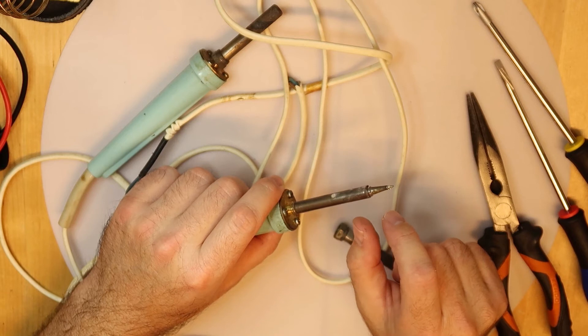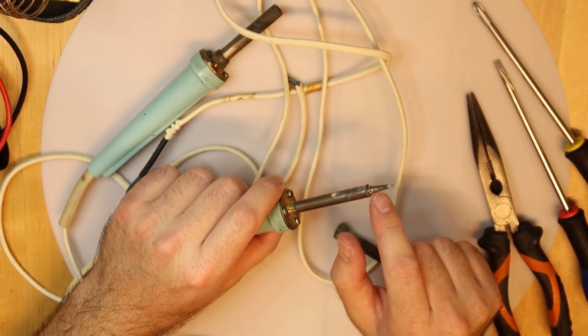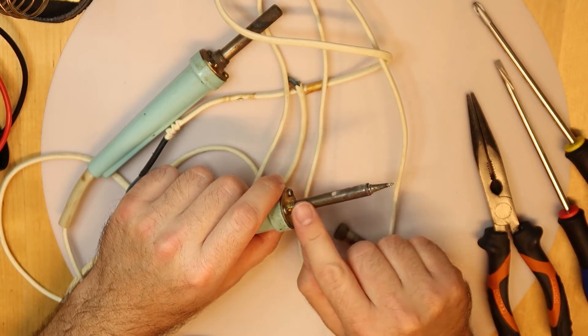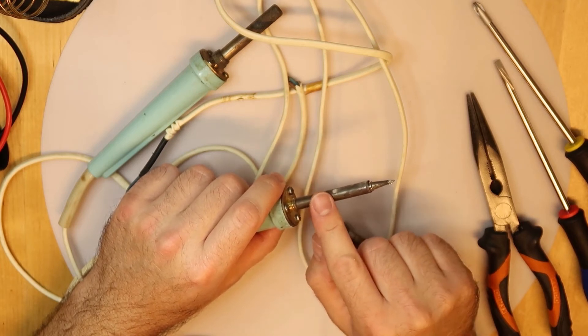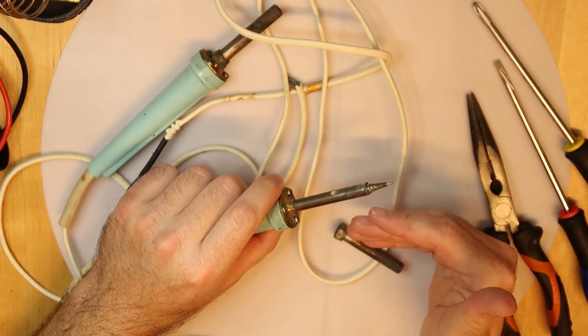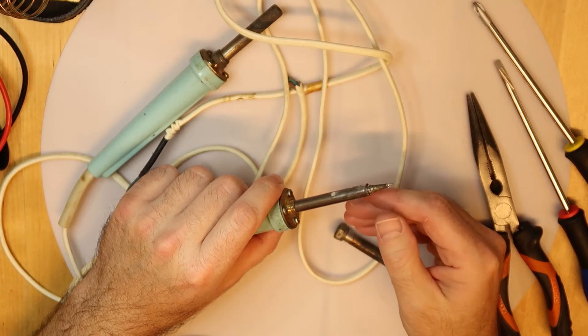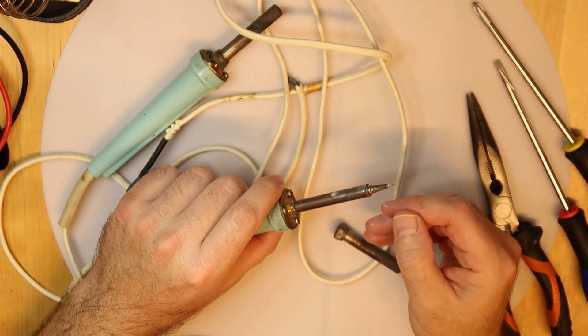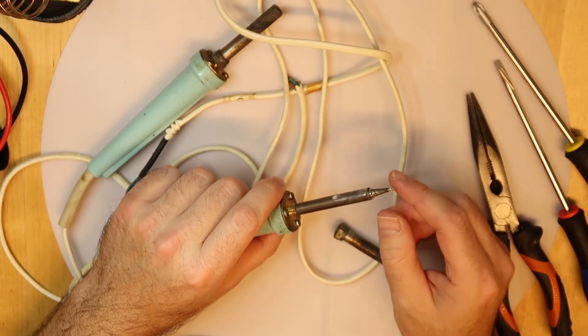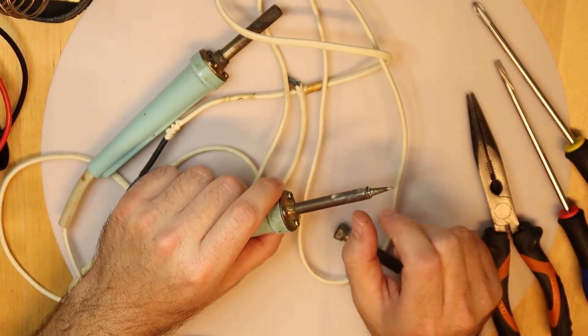When it has less force, there is a relay here that when it is heated stops the power to the heating element. When it is stopped, it becomes colder, and then the magnet becomes stronger again. When the magnet is stronger, it automatically attaches the relay inside and then it is heated again.